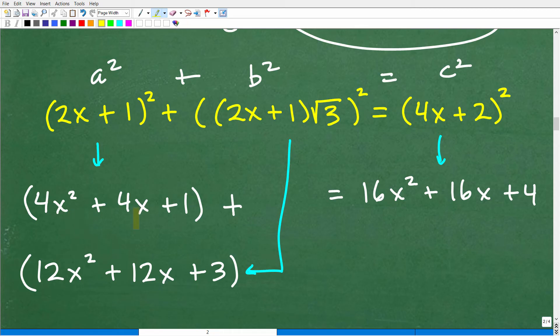And sometimes you're going to have to give yourself as much room as possible on your paper when you're doing these type of problems. There's a lot going on. So we figured out (2x+1)² is this. We figured out ((2x+1)√3)² is this. And we know what (4x+2)² is, it is this. So now we're going to add up this side of the equation and see if we get this side. So let's go ahead and do that now.